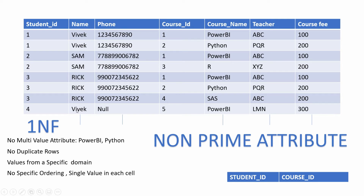The definition says these non-prime attributes should be fully dependent on the composite primary key. But in our dataset, name and phone number are dependent only on student ID, and course name, course fee, and teacher are dependent only on course ID — each being just a portion of our composite primary key. This means the dataset is in first normal form but not in second normal form, because non-prime attributes depend on a portion of the primary key.